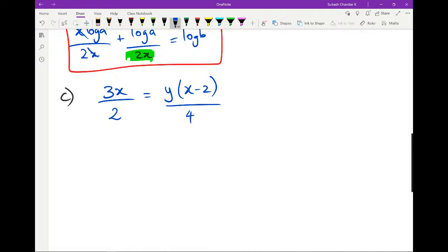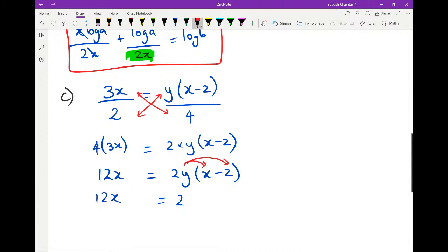So I'm just mindful of time, guys. I'm going to slowly start working on this one at the moment. So what you can do is you can cross-multiply on this because you've got one fraction equals another fraction. So I'm going to rewrite this as 4 multiplied by 3x equals 2 multiplied by y multiplied by x minus 2. And when I do this, I get 12x equals 2y times x minus 2.